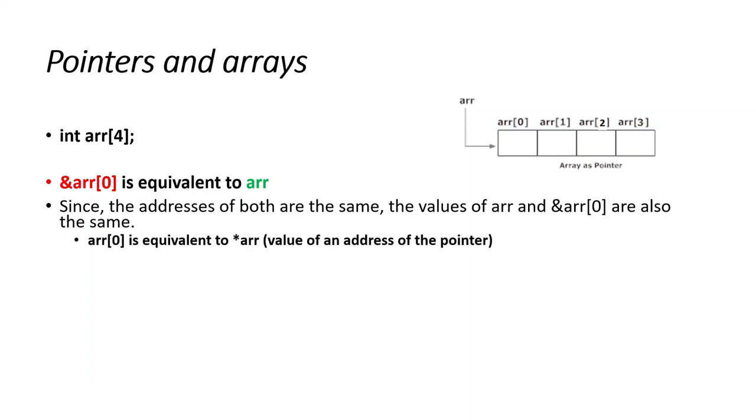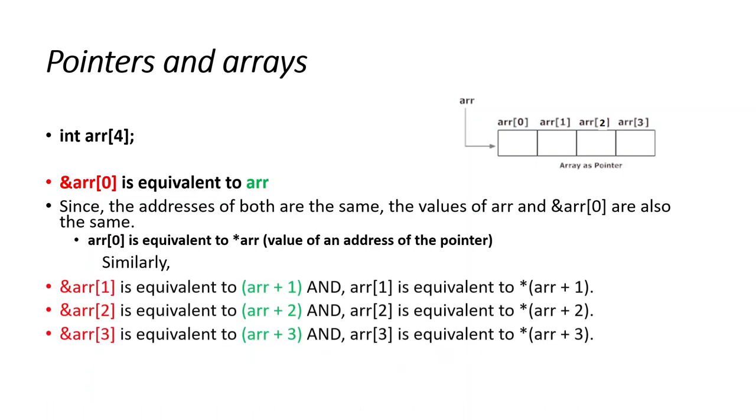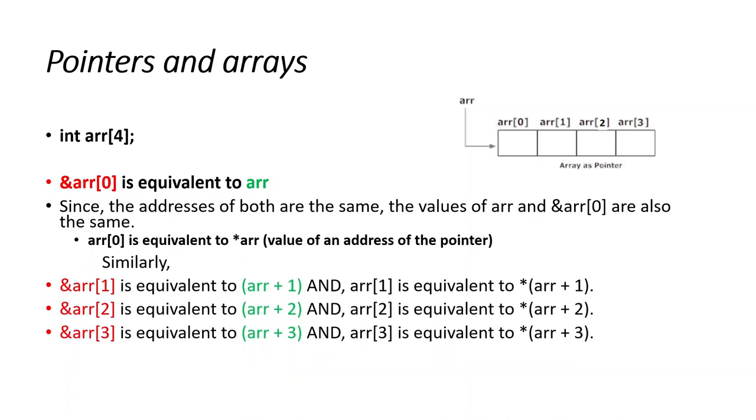arr[0] is equivalent to *arr, the value of an address of the pointer. Similarly, &arr[1] is equivalent to arr+1, and arr[1] is equivalent to *(arr+1).